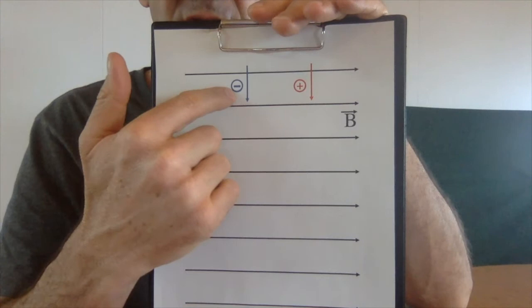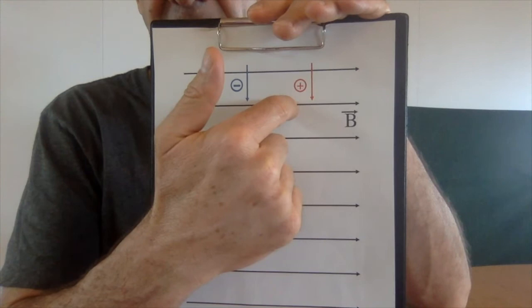Now here I have a negatively charged particle, so I'm going to use my left hand. I point my thumb down in the direction of motion and my fingers in the direction of the magnetic field. In this case, the force on this charged particle is moving into the page — the opposite direction compared to the positively charged particle, which had its force coming out of the page.